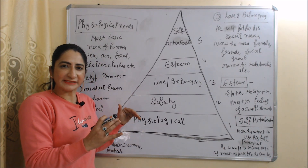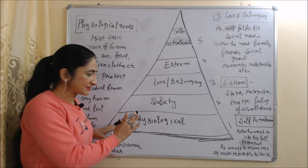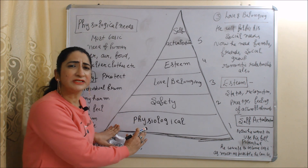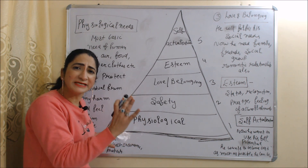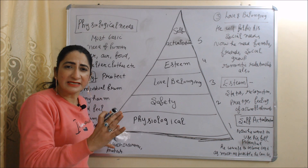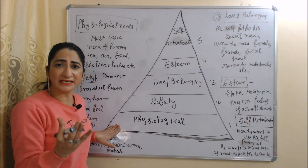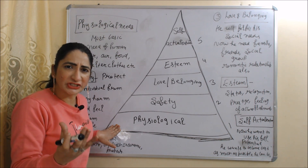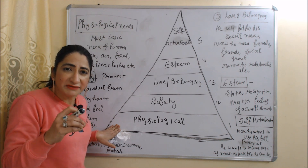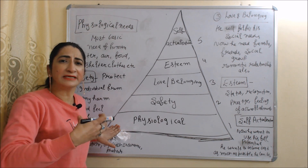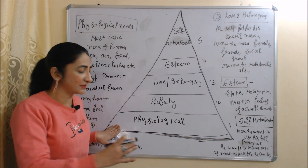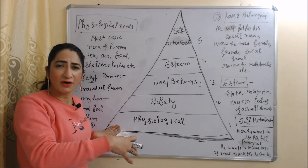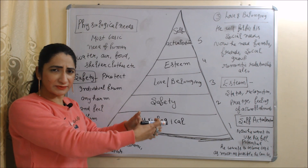We will understand Maslow's Needs Theory with the help of a diagram. Maslow's needs order starts with physiological needs, which are the most basic needs of an individual — for example, the need for air, food, clothing, and shelter. An individual will first be motivated to take action to fulfill physiological needs if they lack them.